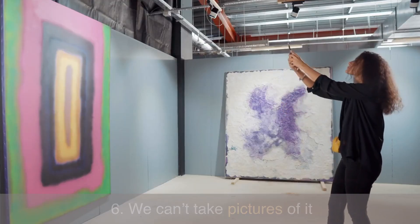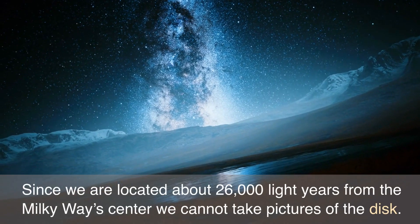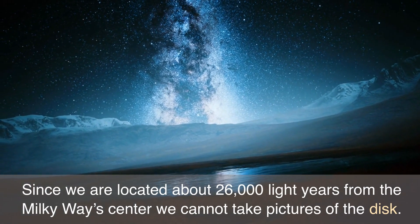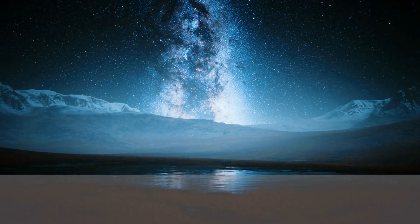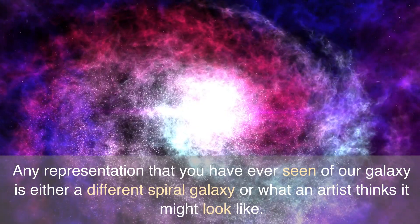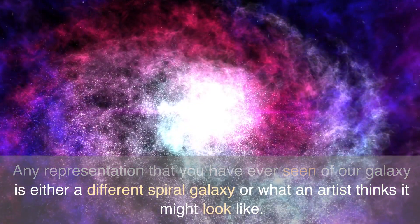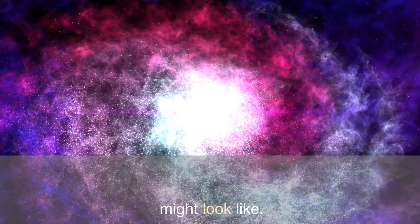Number 6: We can't take pictures of it. Since we are located about 26,000 light-years from the Milky Way's center, we cannot take pictures of the disk. Any representation that you have ever seen of our galaxy is either a different spiral galaxy or what an artist thinks it might look like.